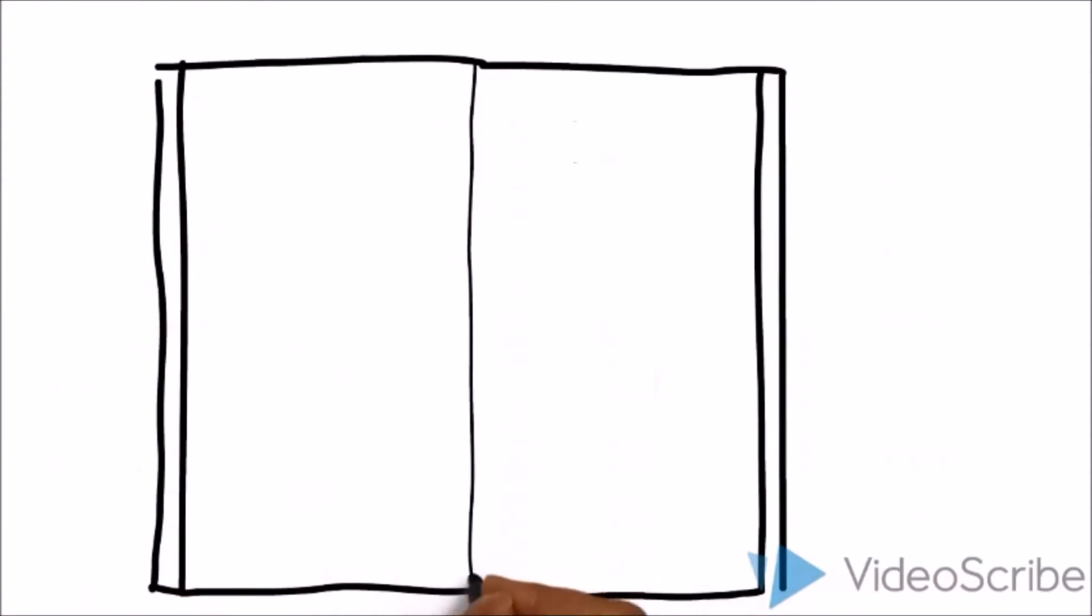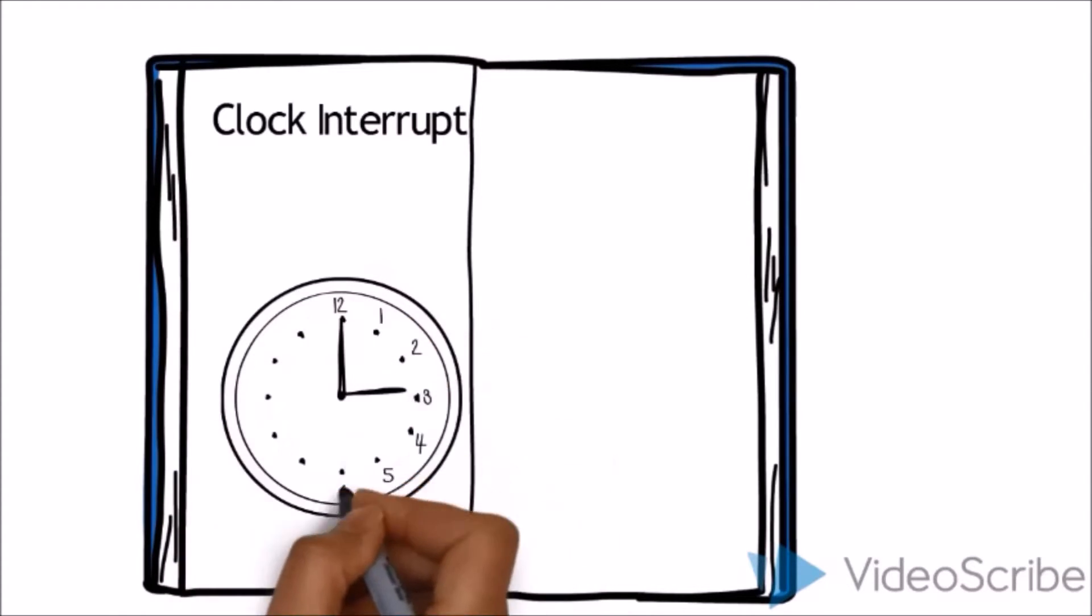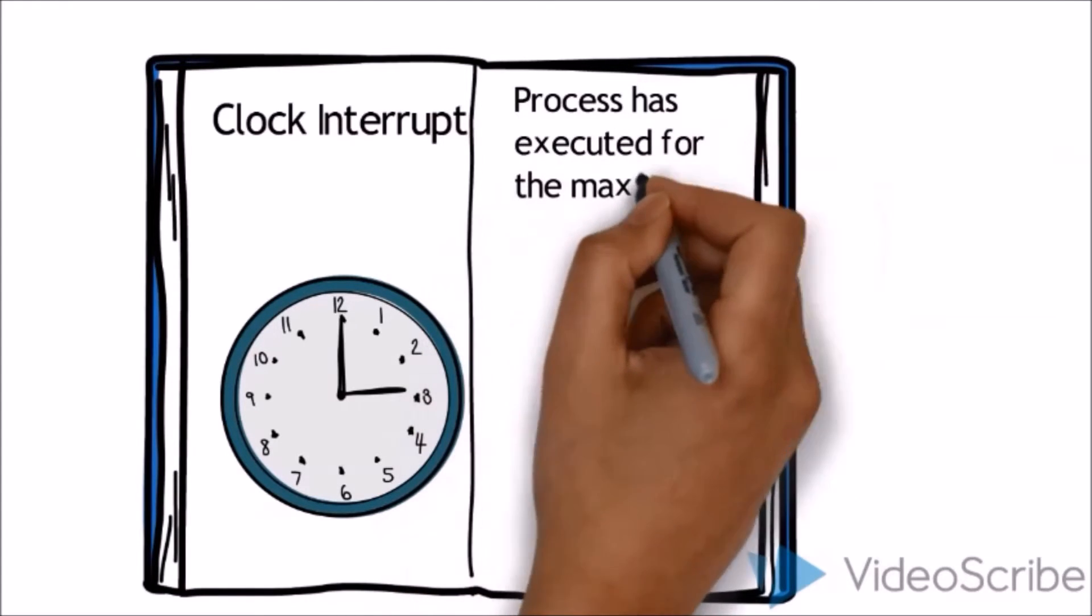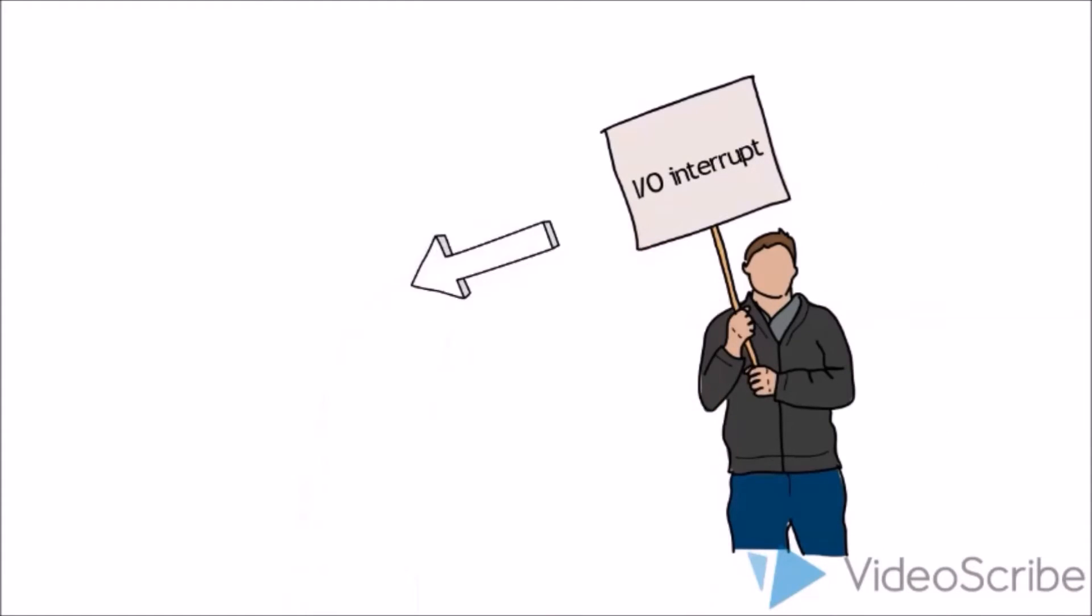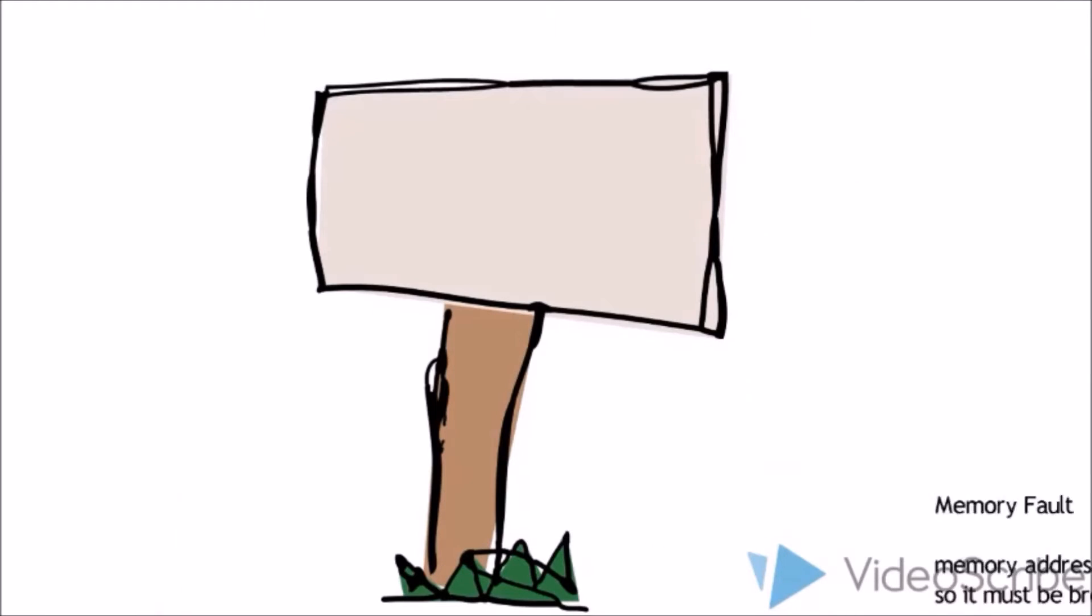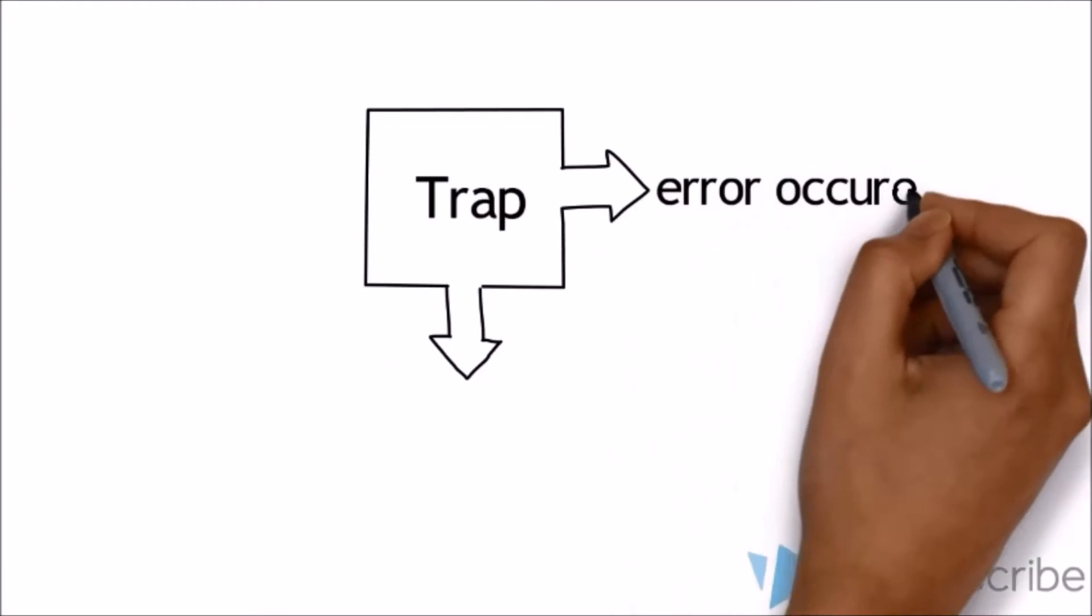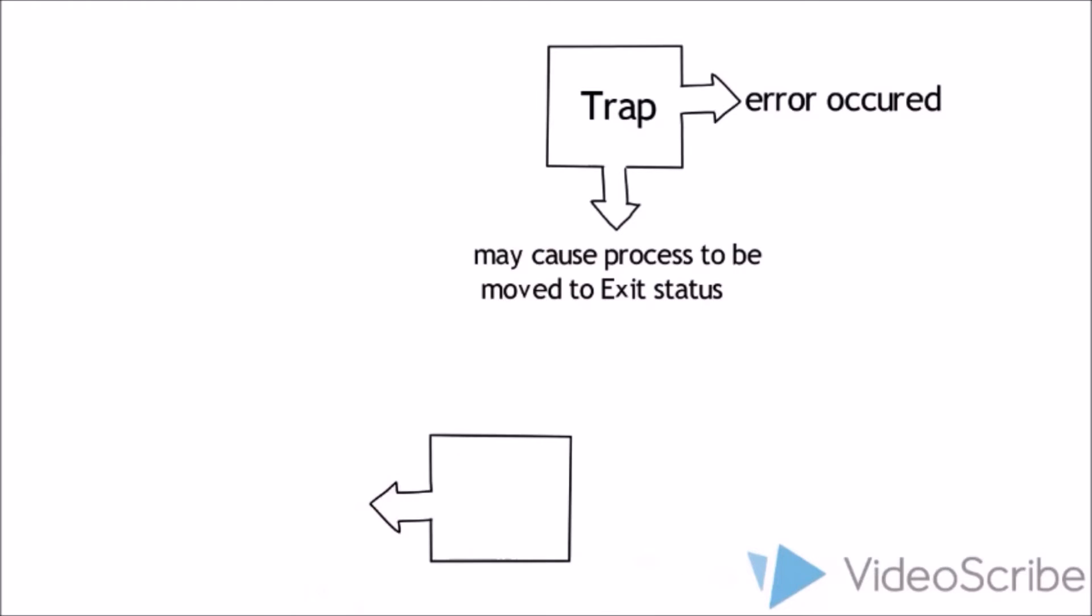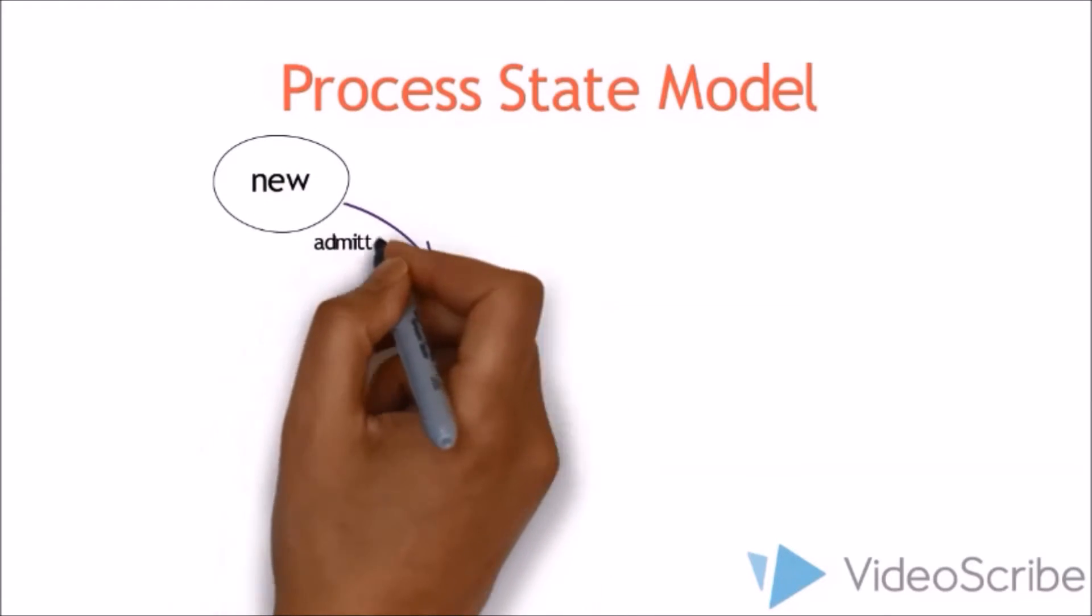Clock interrupt: Process has executed for the maximum allowable time slice. I/O interrupt: Examples of I/O devices are mouse, keyboard, and others. Memory fault: Memory address is virtual memory, so it must be brought into main memory. Trap: Error will occur, may cause process to be moved to exit status. Supervisor call, such as open file. After switching, the state of all processes will save into PCB 0, then load the saved state from PCB 1 to the new process.